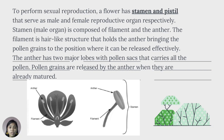To perform sexual reproduction, a flower has stamen and pistil that serve as male and female reproductive organs respectively. The stamen, or male organ, is composed of the filament and the anther. The filament is a hair-like structure that holds the anther, bringing the pollen grains to the position where they can be released effectively. The anther carries pollen sacs that hold all the pollen, and pollen grains are released by the anther when they are already matured.